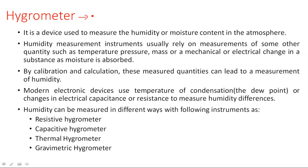Humidity can be measured in different ways: resistive hygrometer, capacitive hygrometer, thermal hygrometer, and gravimetric hygrometer. In the resistive hygrometer, resistance of the device varies; in the capacitive hygrometer, capacitance varies; in the thermal hygrometer, temperature varies; and in the gravimetric hygrometer, the gravitational force varies depending on humidity.